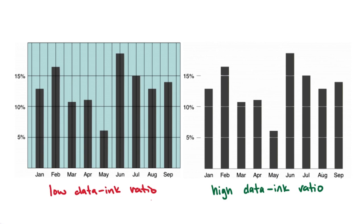When we're building data visualizations, we always want to strive for as high of a data-to-ink ratio as possible. Let's go through a few more examples of how we can take a visualization with a low data-to-ink ratio, or extraneous elements, and reduce it down to something that is simpler and much easier to understand.